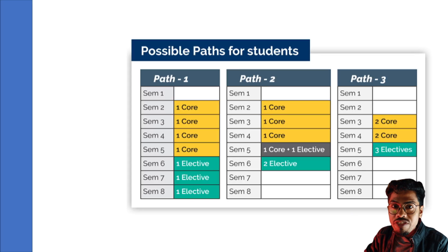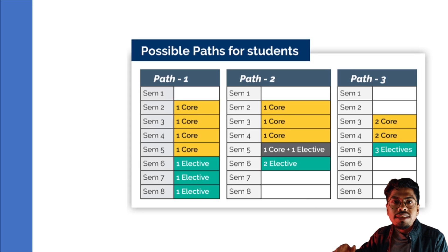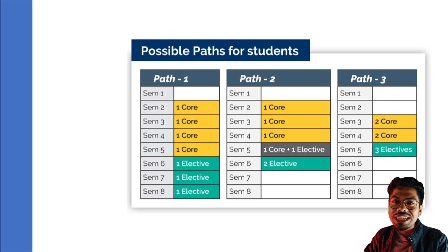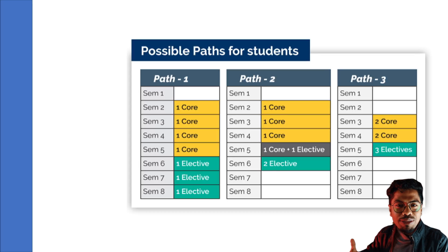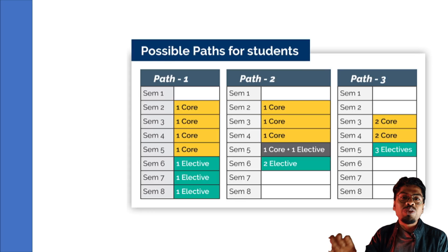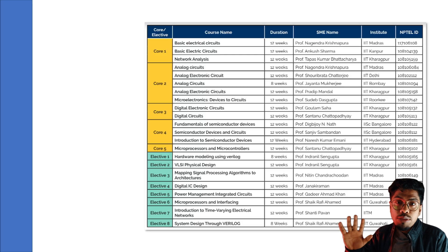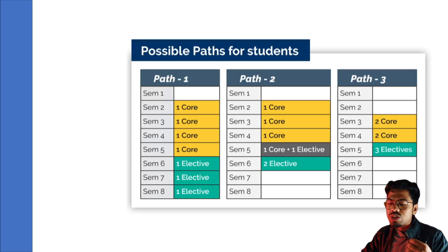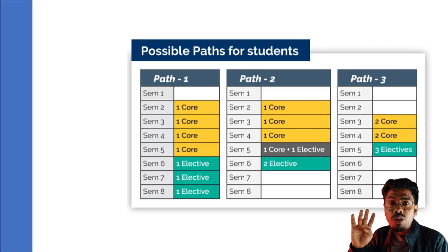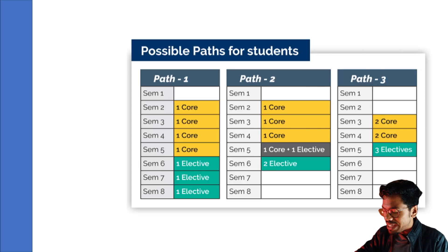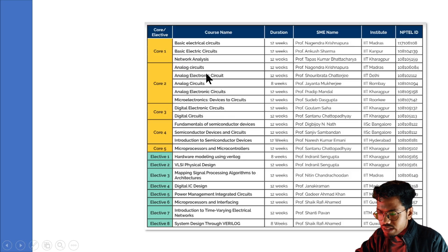You need to spend only 5000 INR — 1000 per exam — to get the full VLSI domain certification from NPTEL/IIT. If you are doing MTech, you can directly take the elective courses since the core courses were covered during BTech. To clarify: you actually need four core courses and two elective courses, so the total cost is 6000 INR.